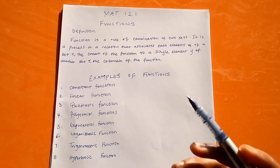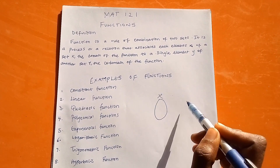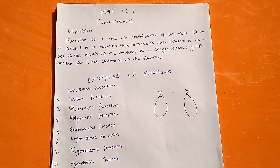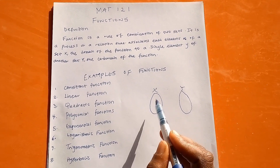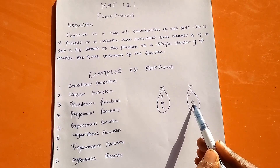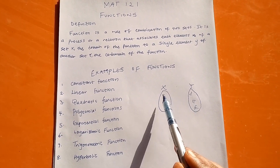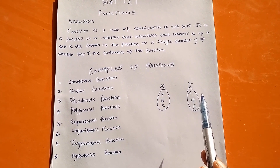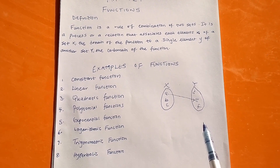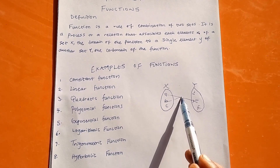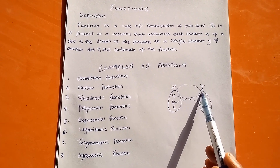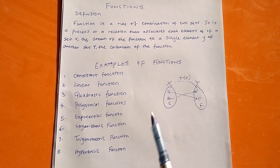Let's look at it this way. Let's say you're given a set X and another set Y. Every set must have its elements, so let's give each set their elements. Set X has elements a, b, and c, and set Y has elements d, e, and f. When you assign to an element of set X a given element of set Y, that is what we call a function. For instance, element a is assigned element e in set Y, and element b is assigned element d in set Y. The rule that combines these two elements together is what we call a function — that is what f(x) is all about.